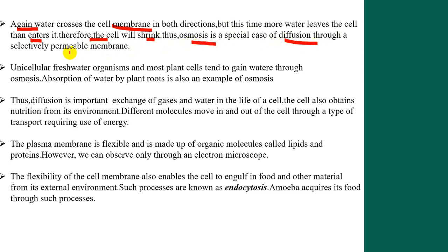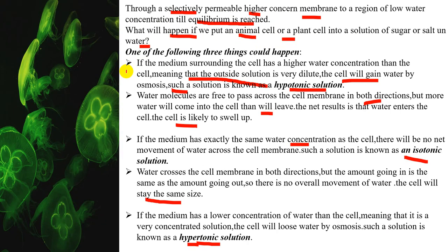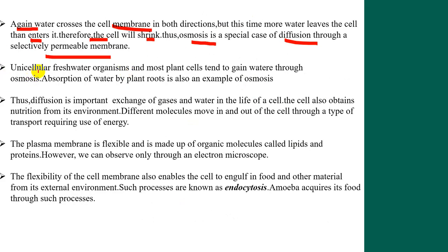To summarize: in isotonic solution, water content is equal and the cell's size and shape do not change. In hypotonic solution, more water enters the cell and it swells up. In hypertonic solution, the cell's water content is reduced and the cell shrinks. Unicellular freshwater organisms and most plant cells tend to gain water through osmosis. Absorption of water by plant roots is also an example of osmosis.